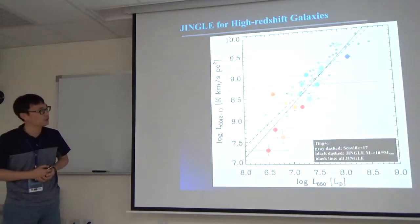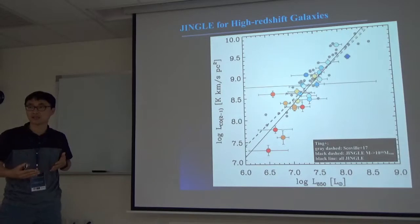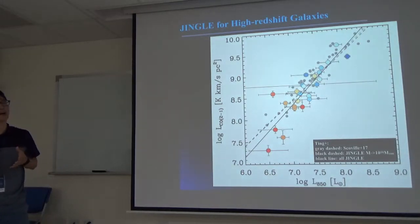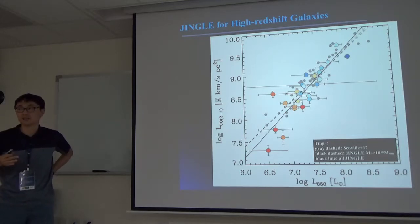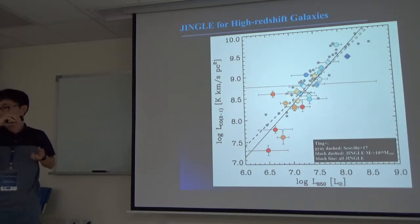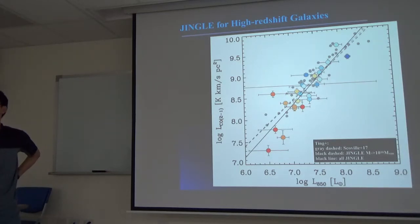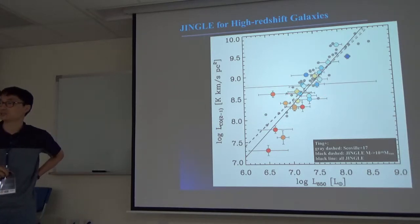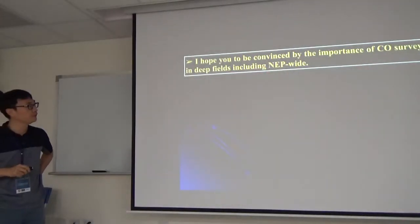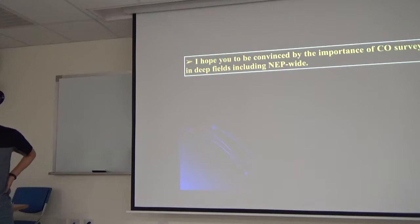There are two types of observations. From this CO observation we would like to study gas properties which include star formation efficiency and star formation history of total gas reservoir. For SCUBA-2 observation we would like to study dust properties. By combining these two we would like to study scaling relations between the two. This is important because if you want to measure the gas content, amount of gas in high-redshift galaxies, even the ALMA is very expensive observation. One thing we can easily do is using this scaling relation. Y is CO luminosity and X is 850 micron dust luminosity. You can make this kind of scaling relations. Just from the observation of dust continuum you can easily predict CO luminosity or gas mass, which means we really need to calibrate the scaling relation very well. That's why we want to calibrate the scaling relation with the JINGLE survey. I hope you to be convinced by the importance of CO surveys in deep fields including NEP.